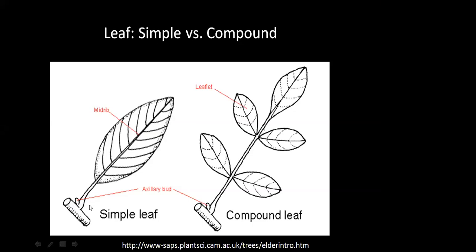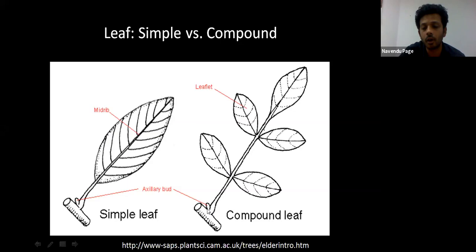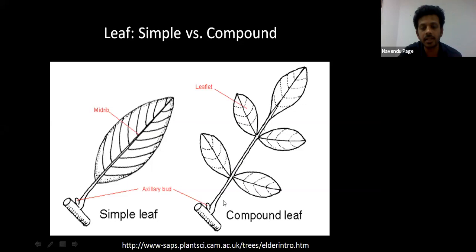Once you've located an axillary bud, it gives you a direct clue as to what constitutes a leaf. If this is an axillary bud, then this entire thing you see here is a leaf, and because the leaf lamina is undivided, it's a simple leaf. On the other hand, if the axillary bud is here and the whole thing coming out from it has its lamina divided into small subunits — which we call leaflets — then it is a compound leaf.